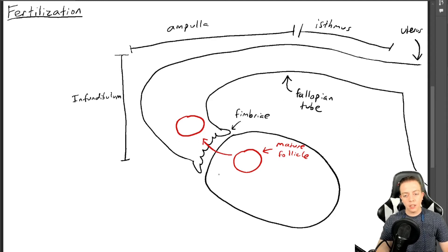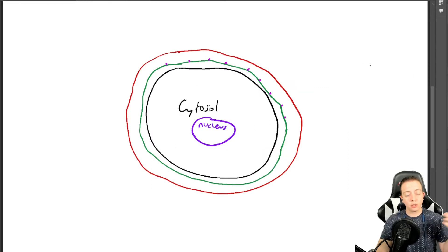But we're going to say that this mature follicle is ovulated into the proper place. It goes through the fimbriae into the fallopian tube, and then of course we know what comes next. We have the sperm that come up through the fallopian tube and they're going to interact with this ovum. And that's where I'm going to move over to the other diagram, take a bit more of a look at this.